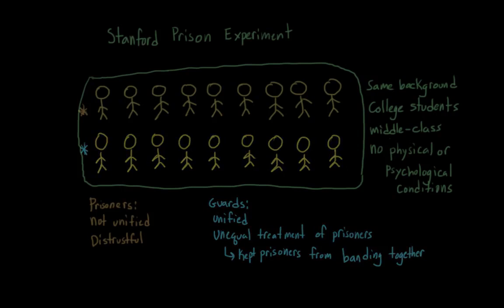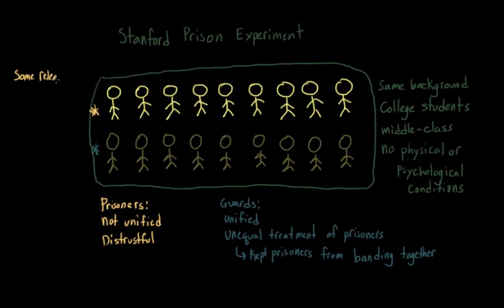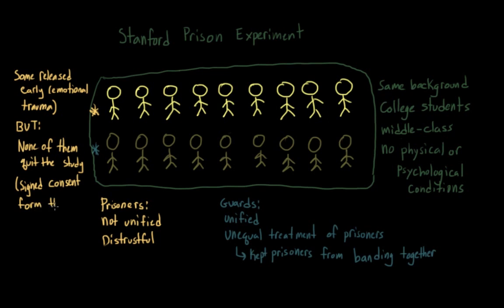I also want to note that while there were a number of participants in the prisoner condition that were released from the experiment because of emotional trauma, none of the prisoners ever just stopped and left. And they must have been aware that they were able to do so, at least on some level, because it was told to them at the beginning of the experiment. It was in the consent form that they signed. But they didn't.